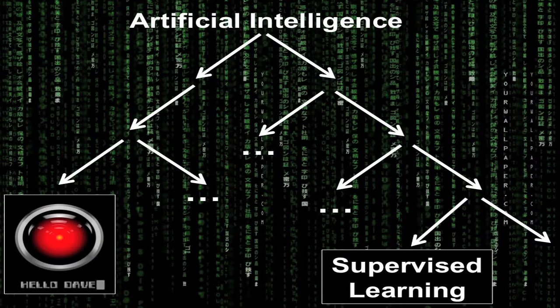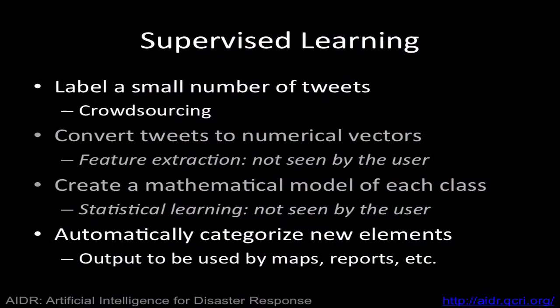Artificial intelligence is a very old computer science field. On one extreme, it has a lot of things that don't actually exist, like HAL 9000, Skynet, etc. On the other hand, there are more modest areas that do exist, like supervised learning.